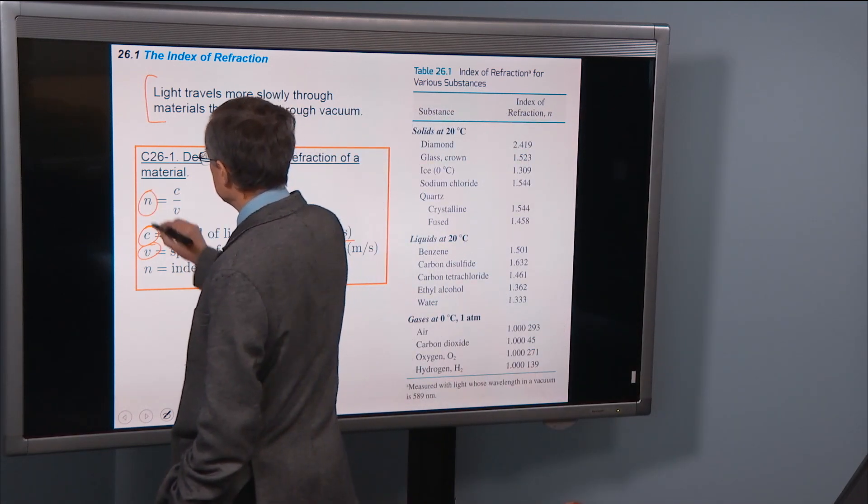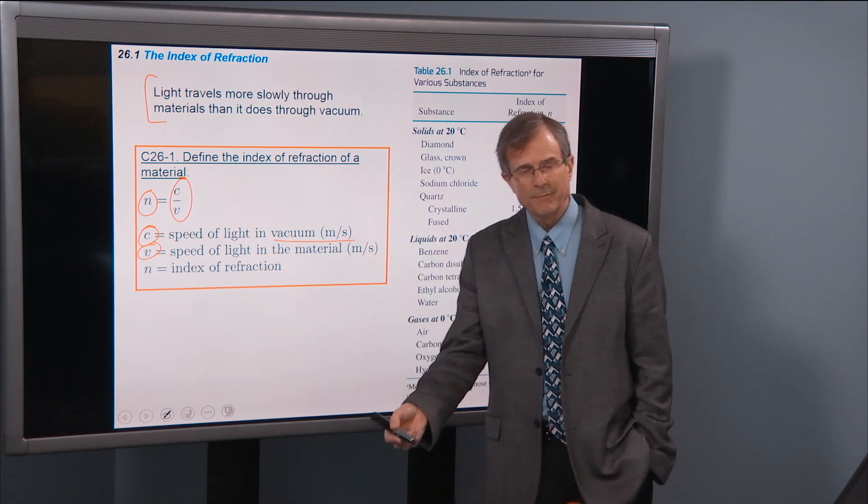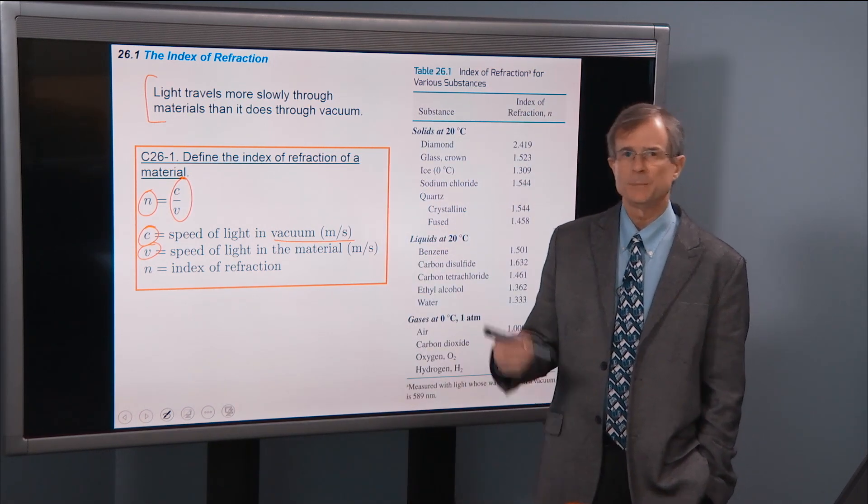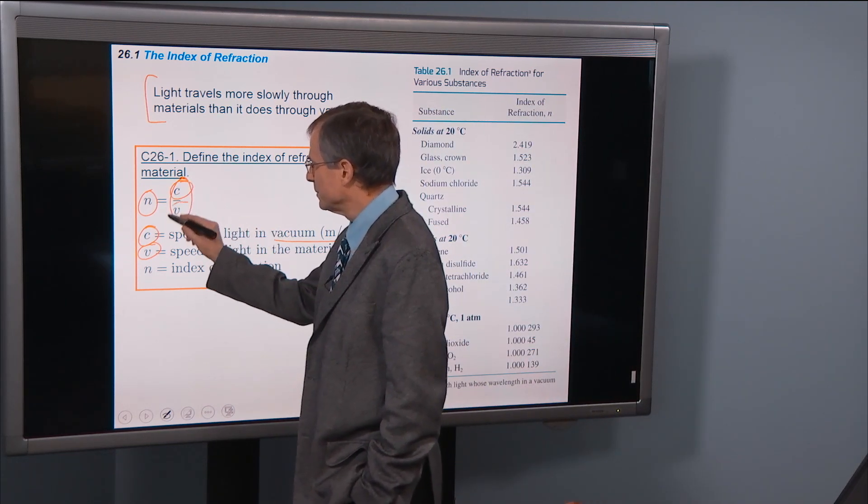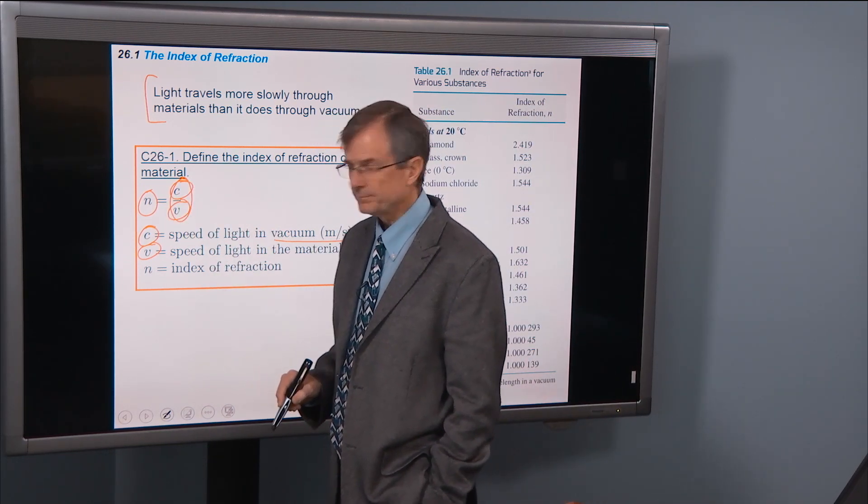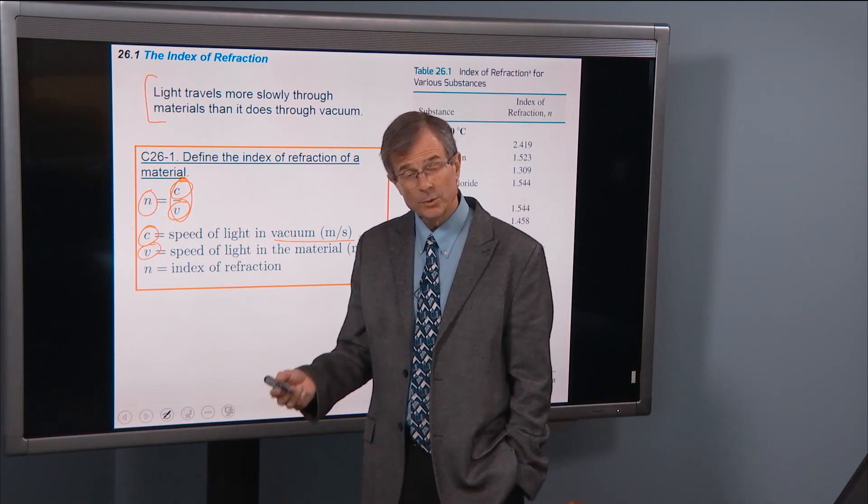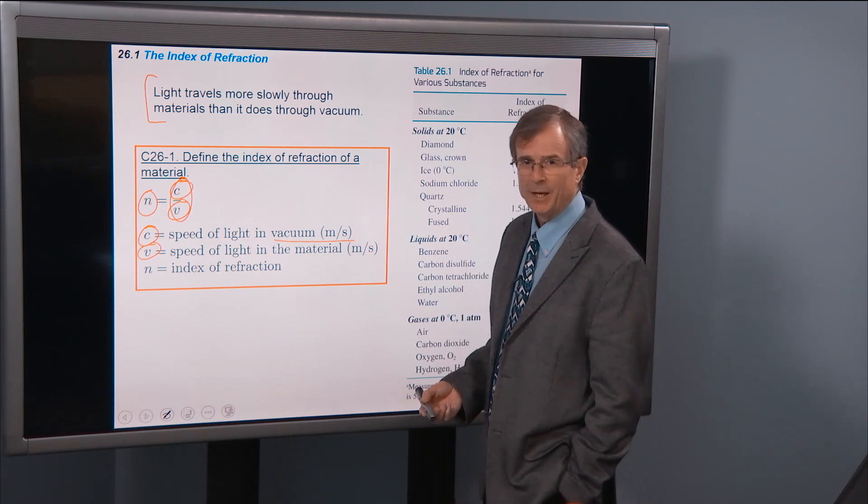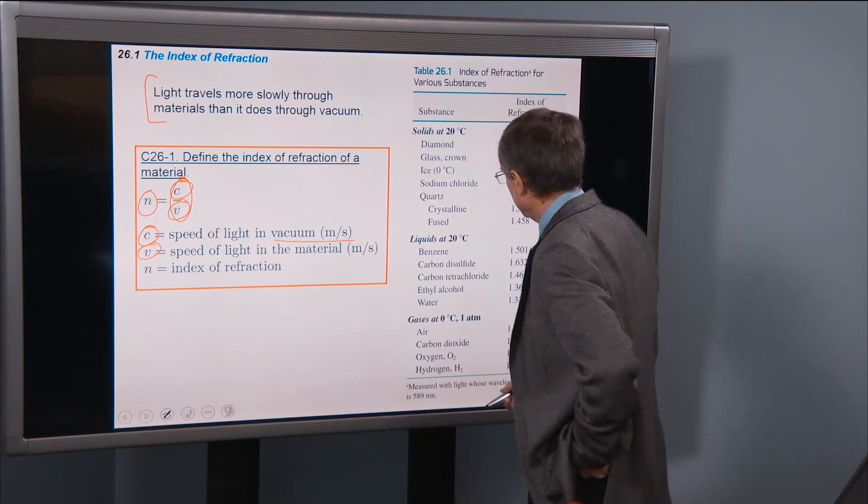Then the index of refraction is defined as a ratio of those two numbers. The speed in vacuum divided by the speed in the material. So this might be 3 times 10 to the 8, this might be 2 times 10 to the 8, which would give an index of refraction of 1.5, which turns out is about what we get for an index of refraction in glass.